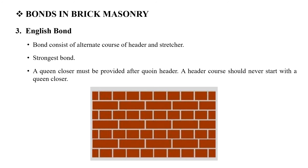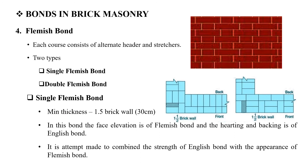The next bond is the English bond, which is the most important and strongest bond. The English bond consists of alternate courses of headers and stretchers. One course is full headers and the next is full stretchers. A header course should never start with a header; each course consists of alternate headers and stretchers.